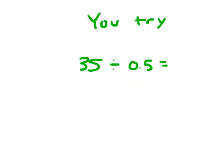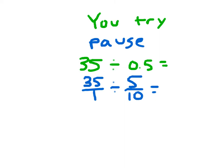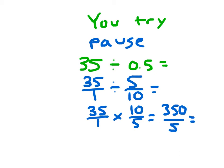You go ahead and try using that same method that I just showed you. Did you rewrite both as fractions? 35 over 1 divided by 5 over 10. Did you rewrite that division problem as a multiplication problem, using the reciprocal of 5 tenths? Hopefully, you multiplied correctly to get 350 over 5, which does equal 70.